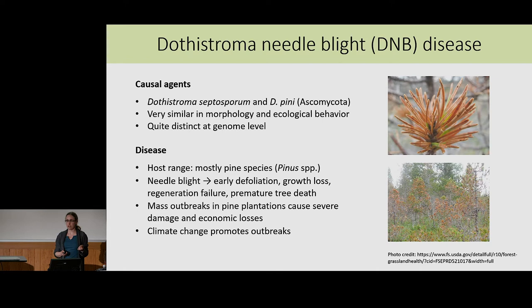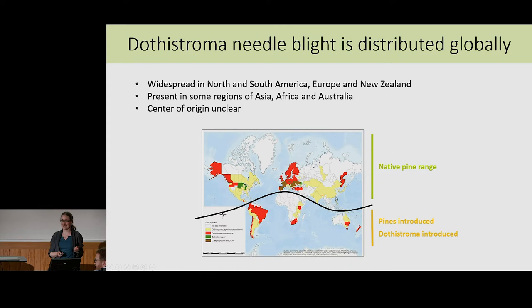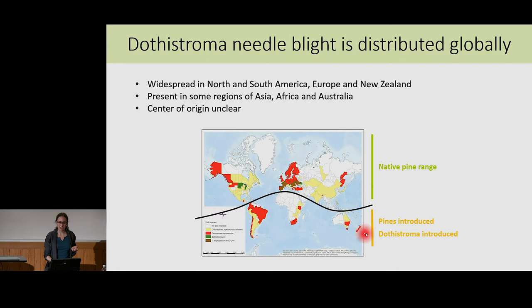Dotystroma needleblight is distributed globally. It's very abundant here in Europe, but also in North America and South America, and it also occurs in some parts of Asia, Africa, Australia, and New Zealand. As most of you probably know, pines are only native to the northern hemisphere, so all the pines present in the southern hemisphere, as well as the pathogen, are introduced species there.